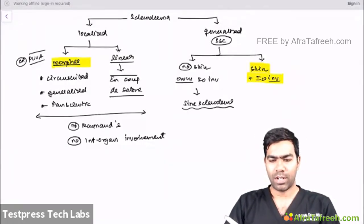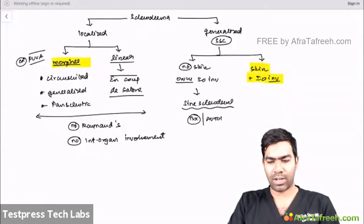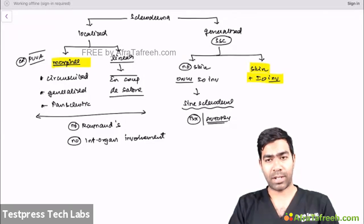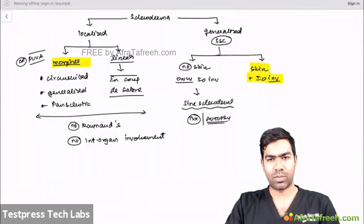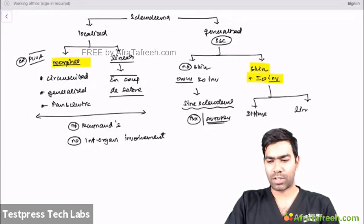Sine scleroderma has only internal organ involvement with no skin thickening — very rare and difficult to diagnose. It can only be found if someone suspects the disease and performs a biopsy, or post-mortem at autopsy. Now, regarding the overall clinical features of generalized scleroderma: skin is the most commonly involved organ. The main skin features are tightening, thickening, and edema — described in exams as 'puffy hands.'